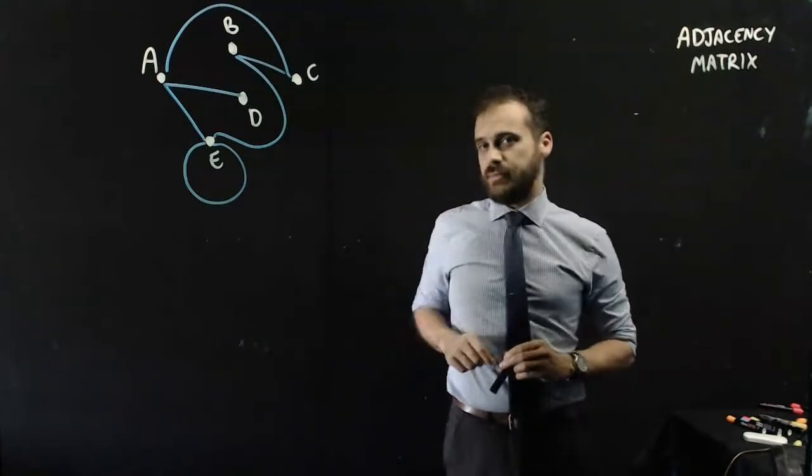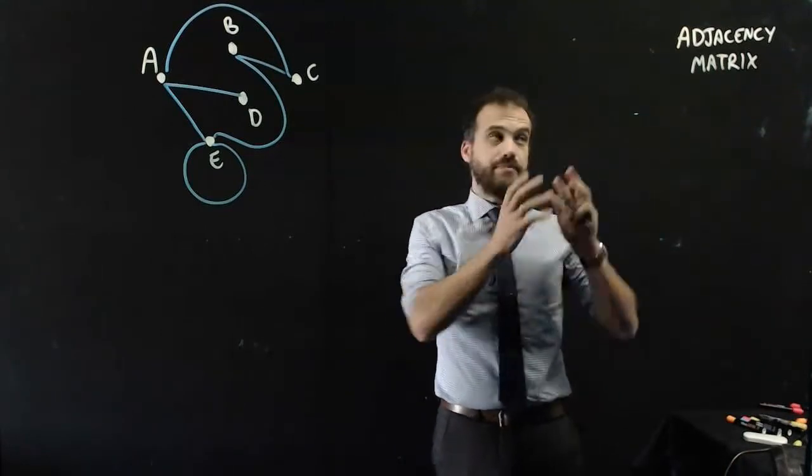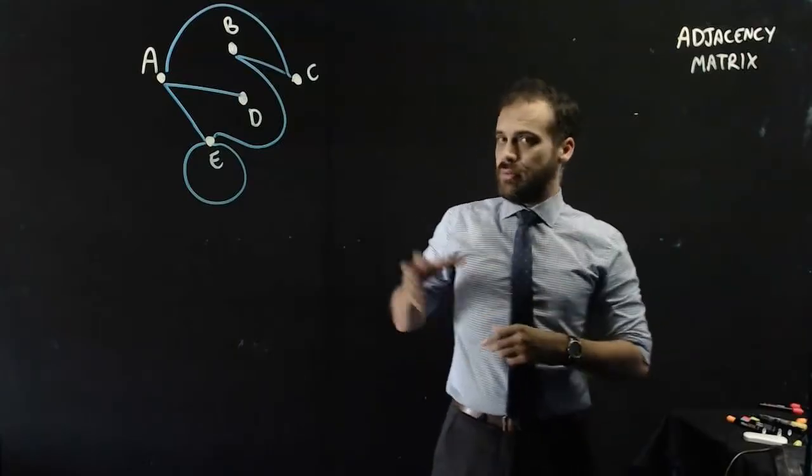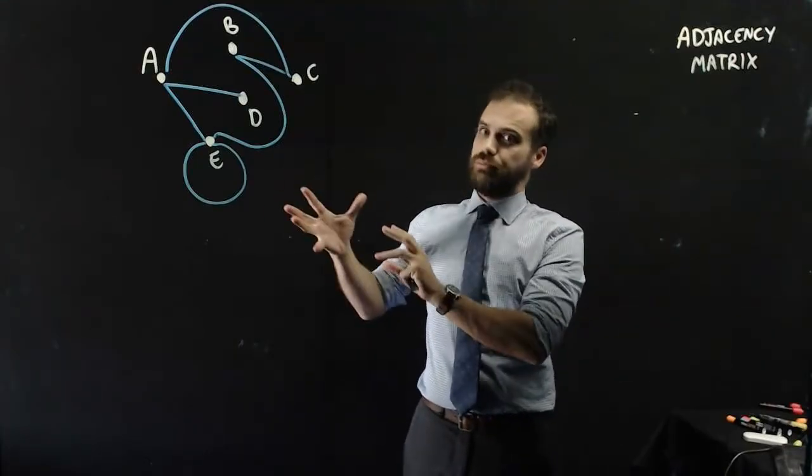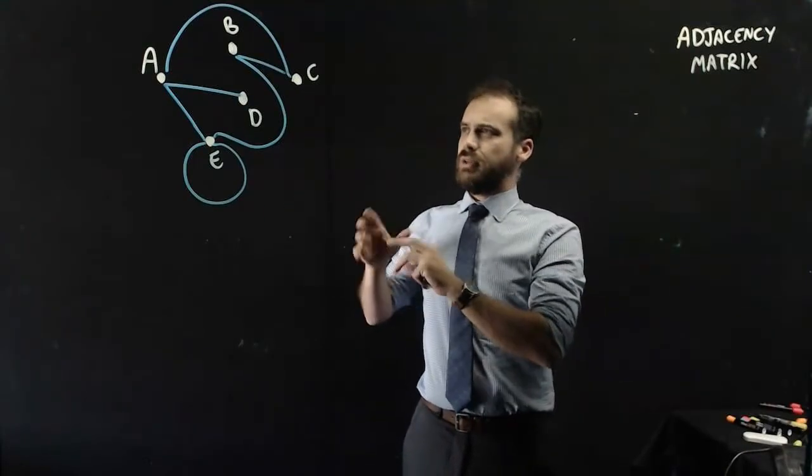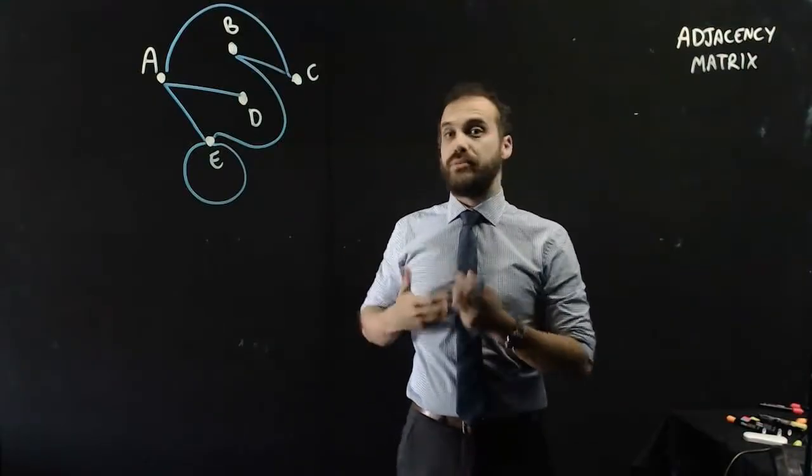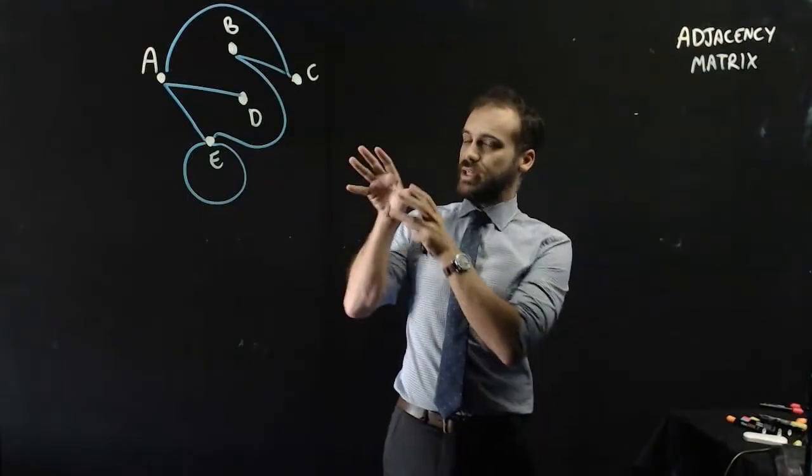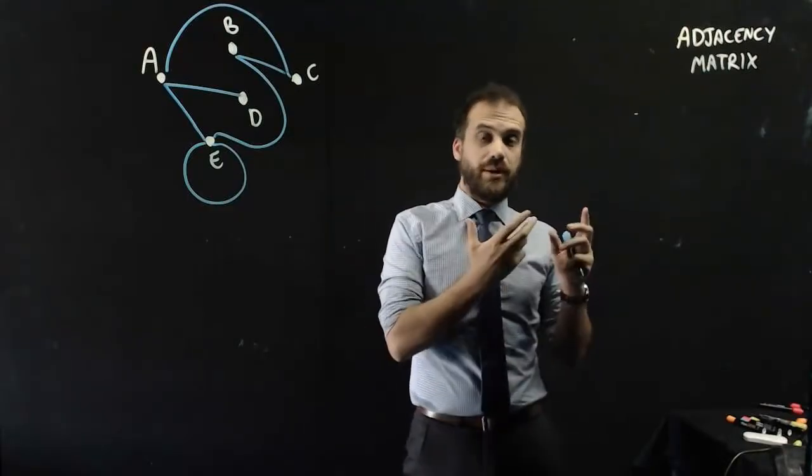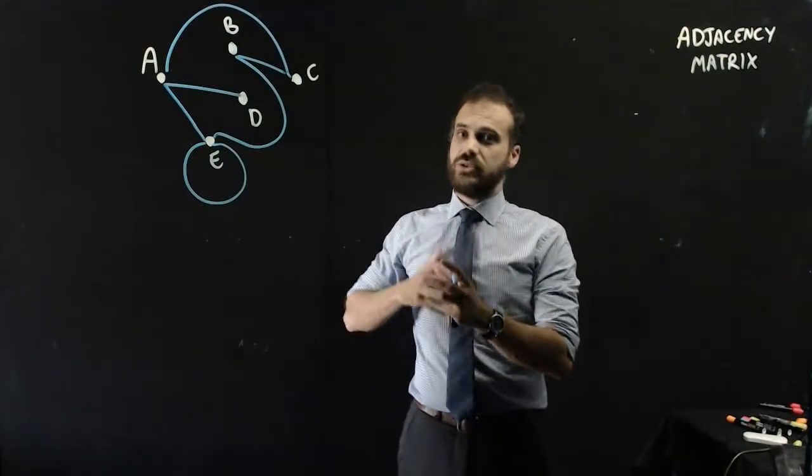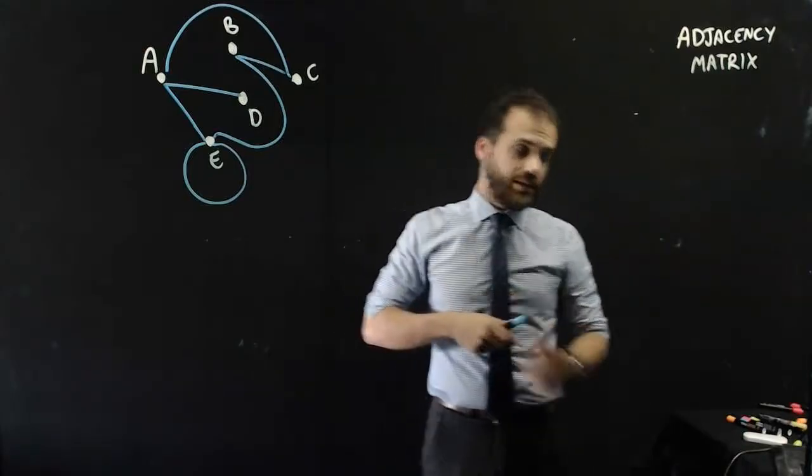So we're going to talk about an adjacency matrix here, and an adjacency matrix is really useful because networks are really beautiful, I love drawing them, but they're kind of hard to understand and they're also hard to perform mathematical calculations on. So if we can take this and turn it into a matrix, we can then start manipulating it mathematically.